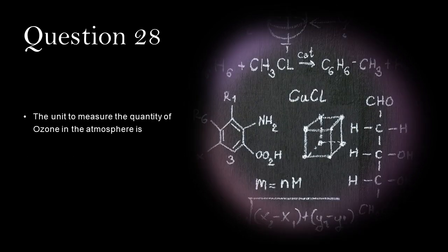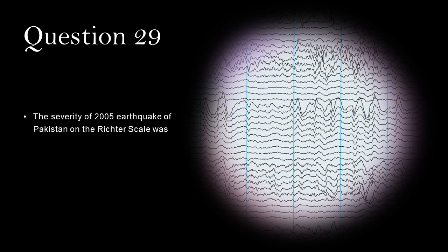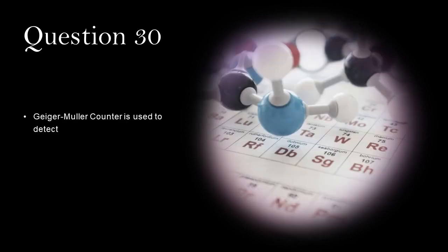The unit to measure the quantity of ozone in the atmosphere is Dobson. The severity of 2005 earthquake of Pakistan on the Richter scale was 7.6. Geiger-Muller counter is used to detect ionizing radiation.